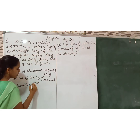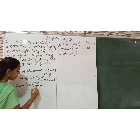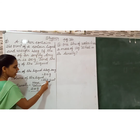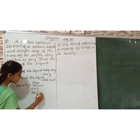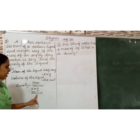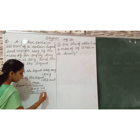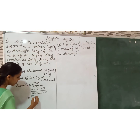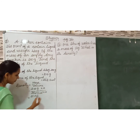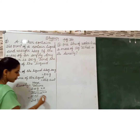The formula for density is: density equals mass divided by volume. Mass is 210 gram divided by 262.5 centimeter cube. Since 262.5 is a decimal number, we multiply both the numerator and denominator by 10, giving us 2100 divided by 2625.